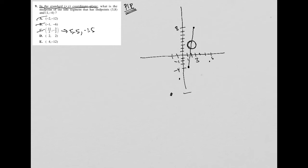2, 2. So this is 2. This is 2. This is here, right? It's close. It probably is the correct answer. So it's at least in the right area. And then 4, negative 12. I'm at 4. And again, negative 12 is way down here. So it must be choice D.